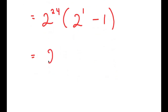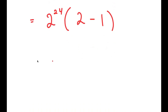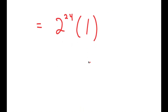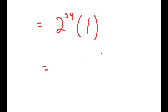This is equal to 2 to the power of 24 times 2 minus 1, which is equal to 2 to the power of 24 times 1. And anything times 1 is just equal to itself, so this is just equal to 2 to the power of 24.